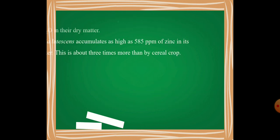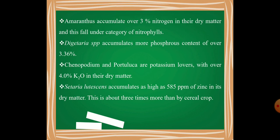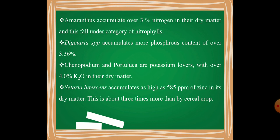Let me tell you a question from PhD, SRF, or JRF exams. Amaranthus is classified as a nitrophil — it can accumulate over 3% nitrogen in its dry matter. This question has been asked in exams: is Amaranthus a nitrophilous plant? The answer is yes, with 3% nitrogen accumulation.